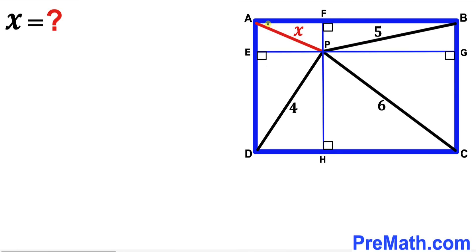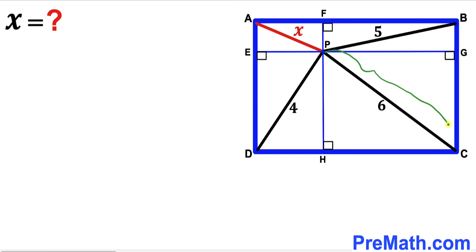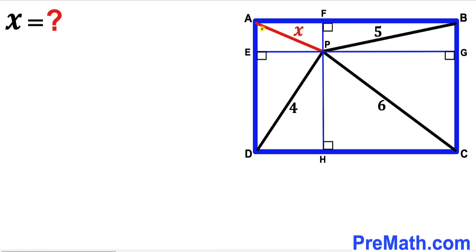Let's make an observation. We can see that AP is the diagonal for the first rectangle, BP is the diagonal for the second rectangle, CP is the diagonal for the third rectangle, and DP is the diagonal for the fourth rectangle.